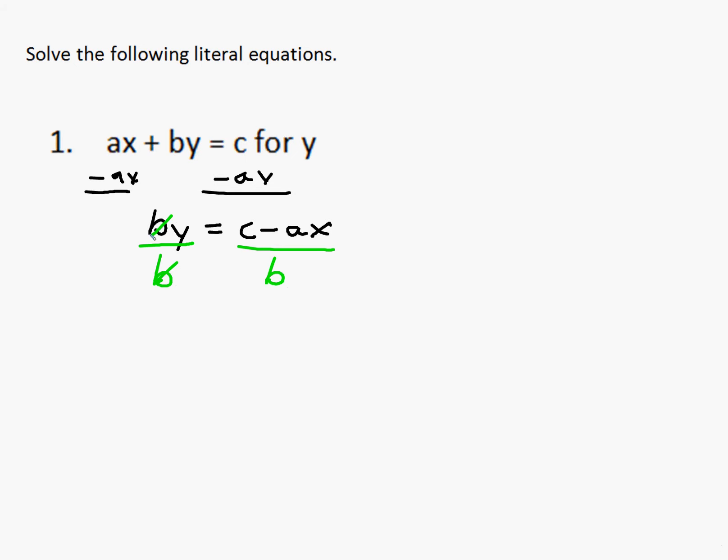So over here on the left side, the b's reduce, and we end up being left with y equals c minus ax over b. We go ahead and leave it like this, and that is our answer we solved for y.